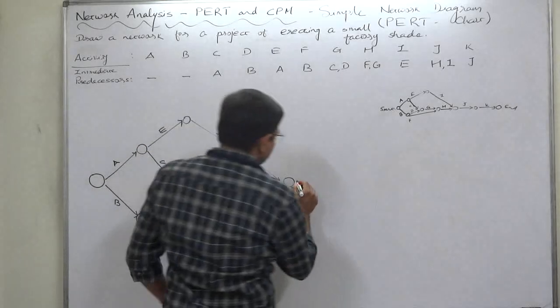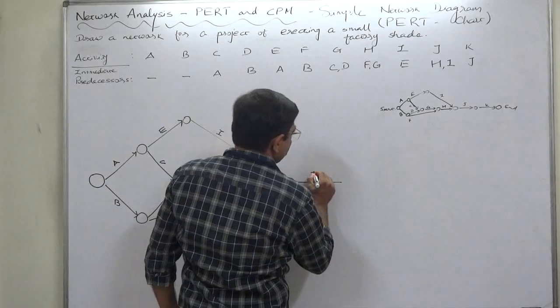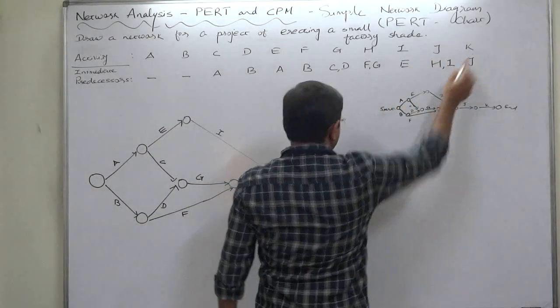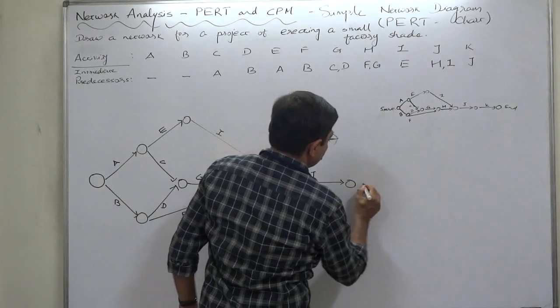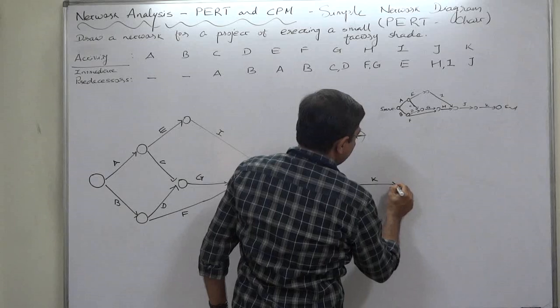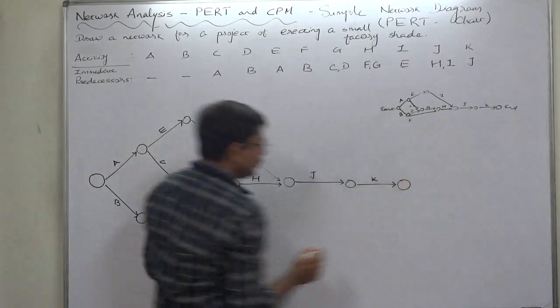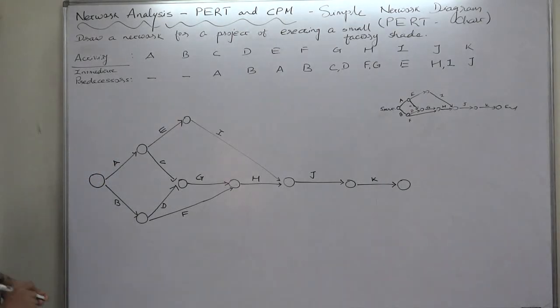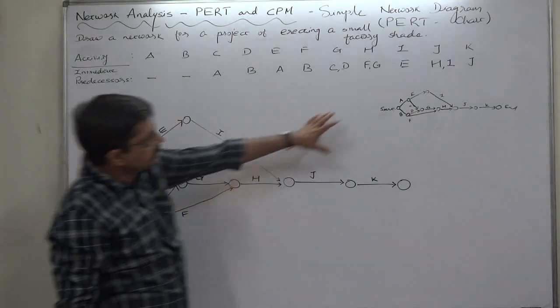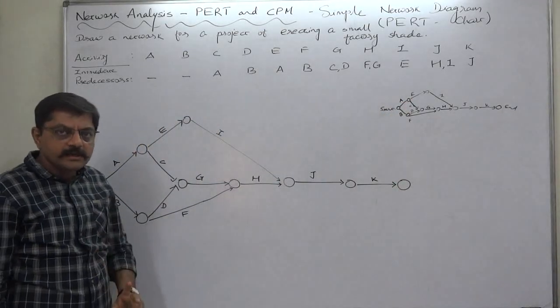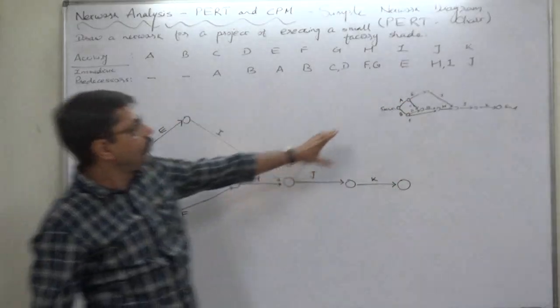So now this is J. J is the only predecessor of K, so this is K, and K is the last activity, so this is the end event. See, more or less the same—this is just a rough one.